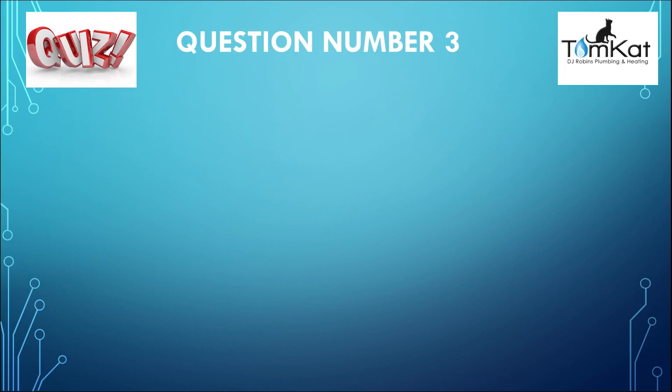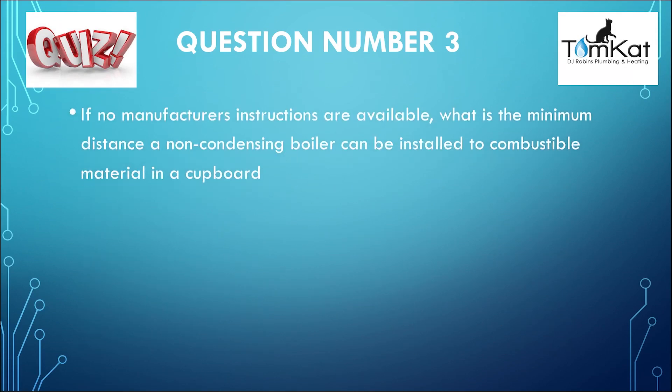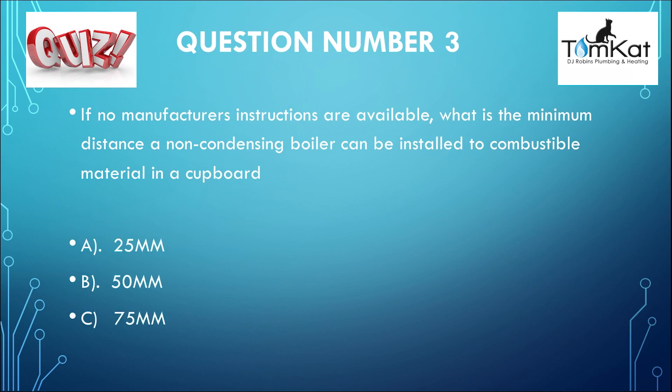Question number three: If no manufacturer's instructions are available, what is the minimum distance a non-condensing boiler can be installed to combustible material in a cupboard? Is it A, 25 millimetres? Is it B, 50 millimetres? Or finally, is it C, 75 millimetres? That is the end of question number three.